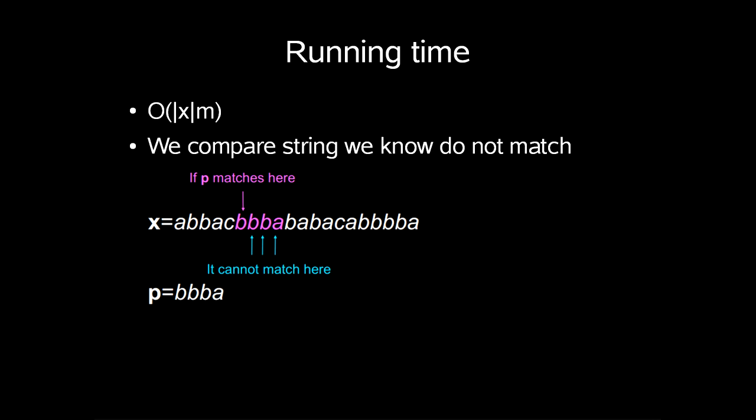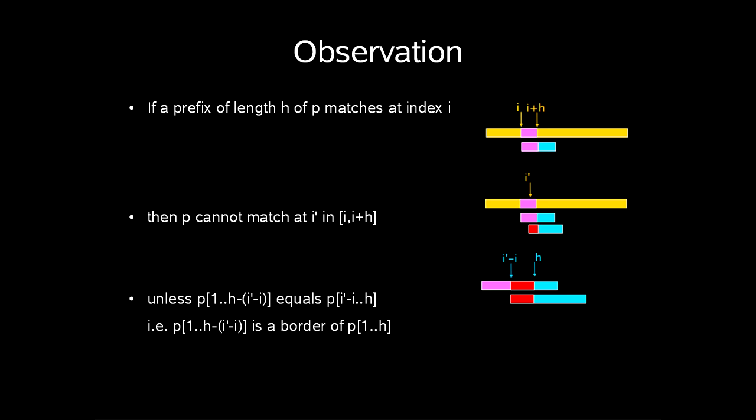So you might notice a few problems with this. First of all, the running time is order length of the string times pattern length. As you see, we compare strings we know do not match, like this below. So we observe that if a prefix of length h of p matches at index i, then p cannot match at i prime in i to i plus h unless p1 up to h minus i prime minus i equals p i prime minus i to h. That is, p1 up to h minus i prime minus i is the border of p1 up to h.